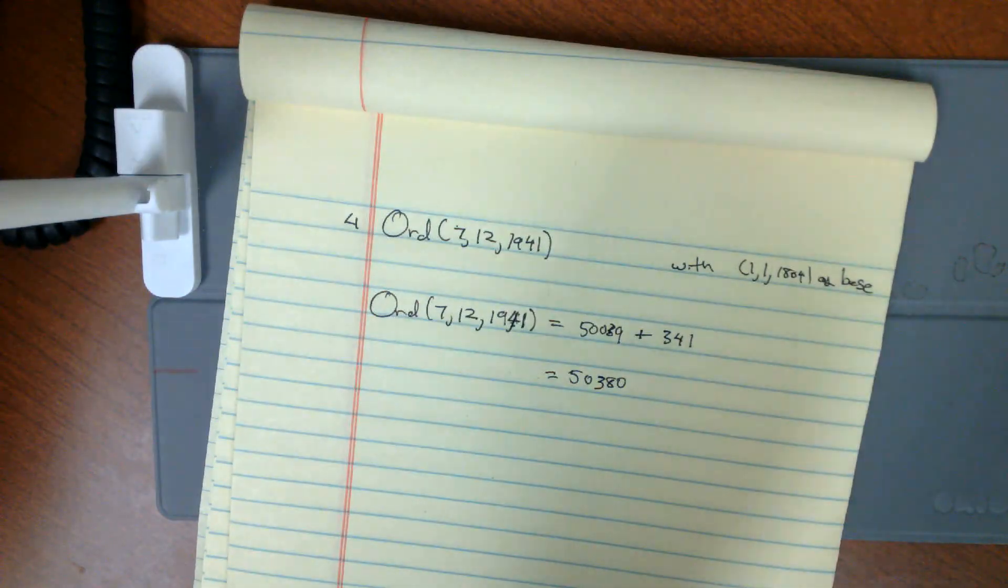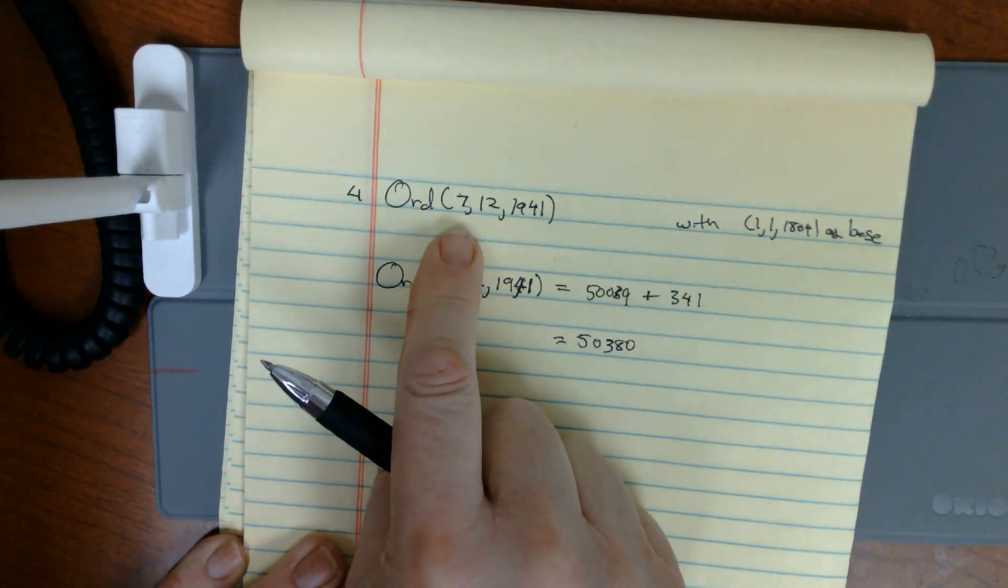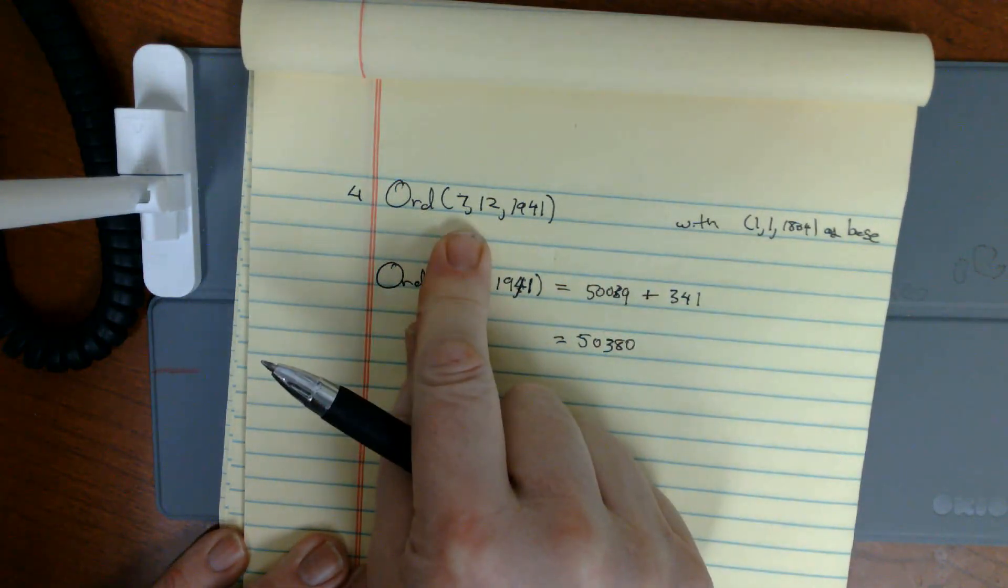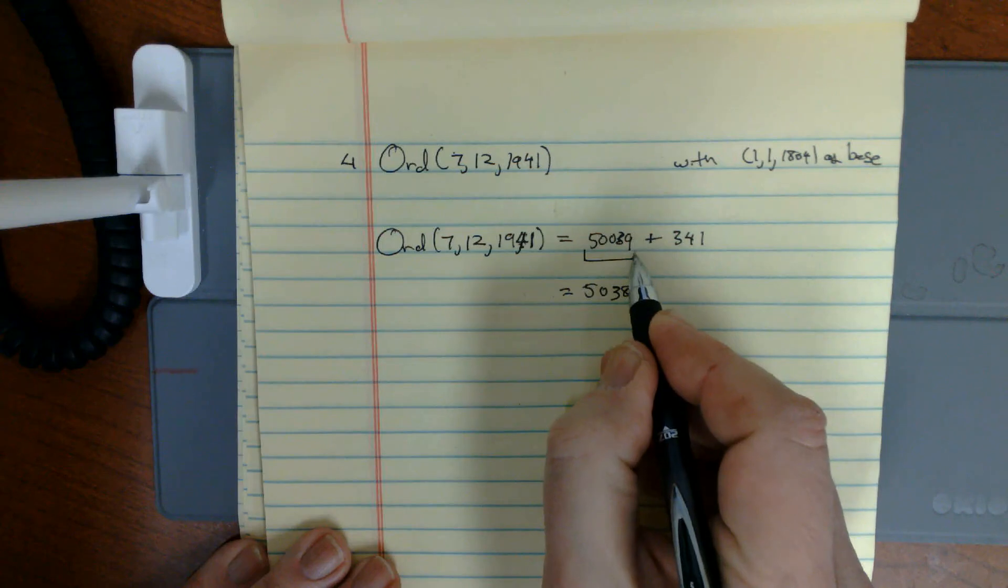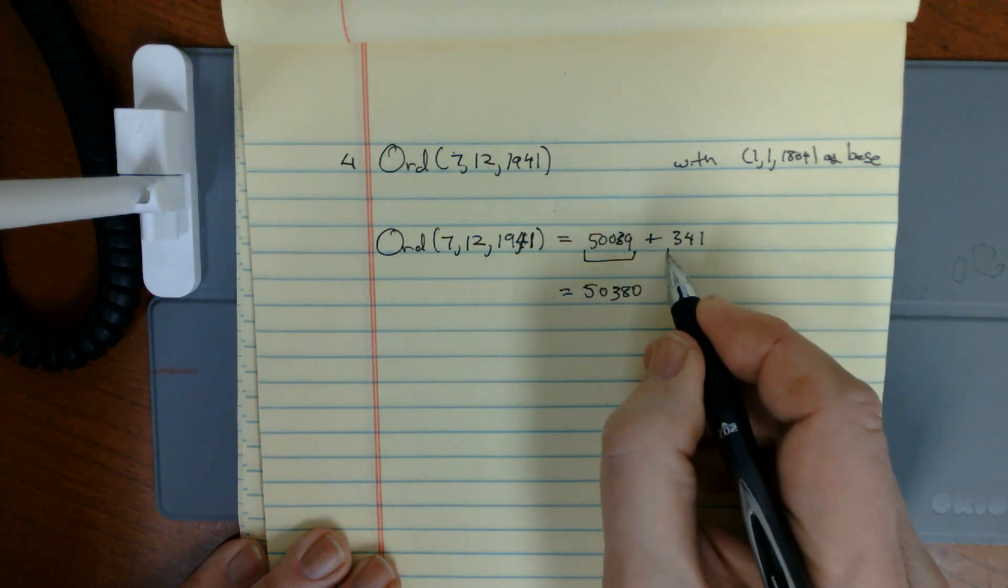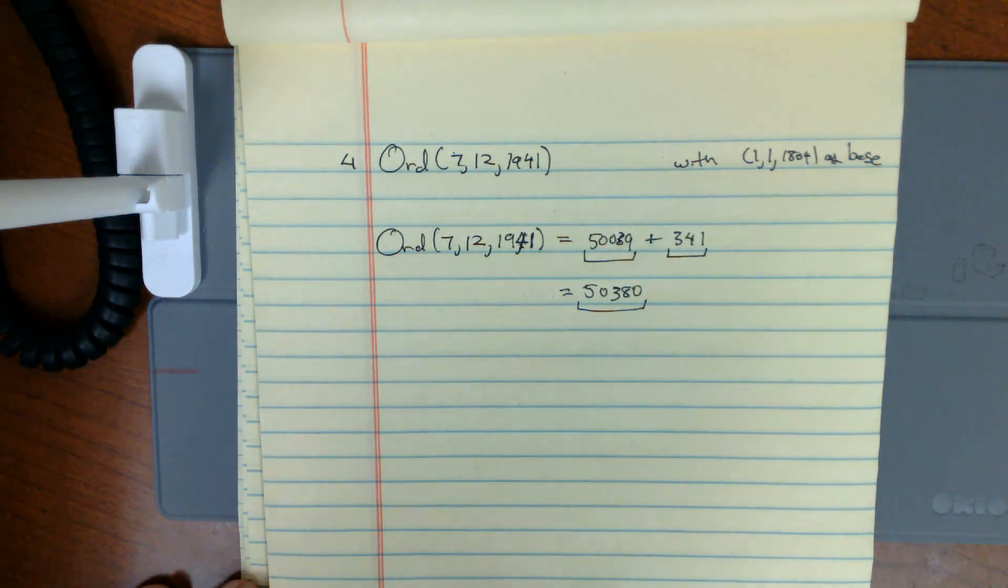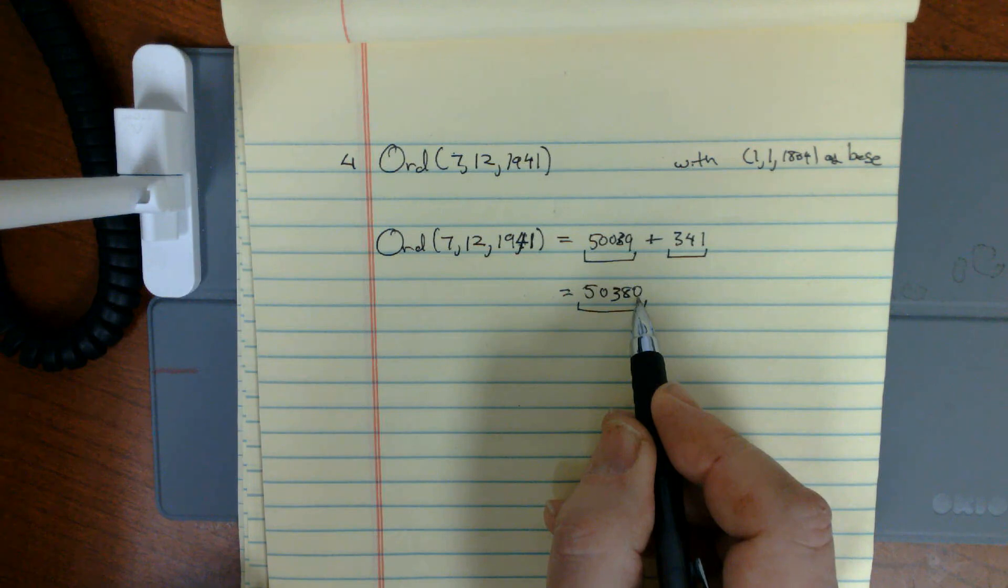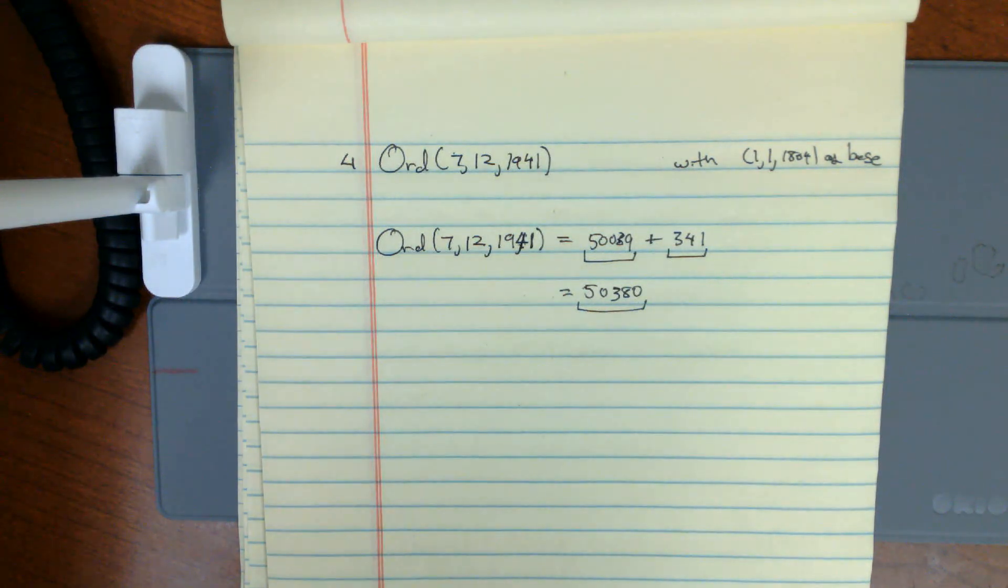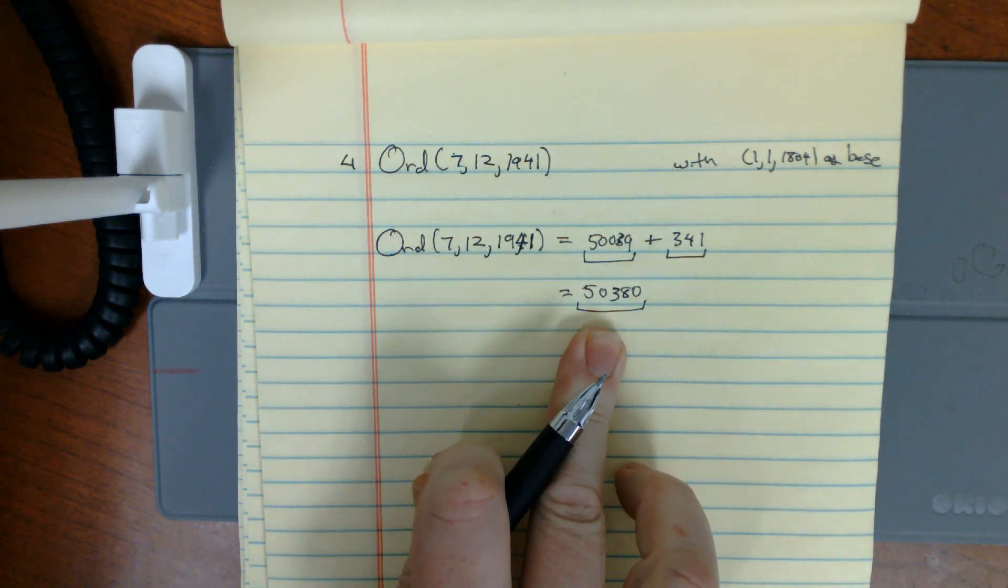Now, to calculate the big ord, that is, how many days from the beginning of my calendar to December 7, 1941, I take the number of days which I calculated plus the ordinal day of the year. This gives me that, on that calendar, December 7, 1941, is the 50,380th day.